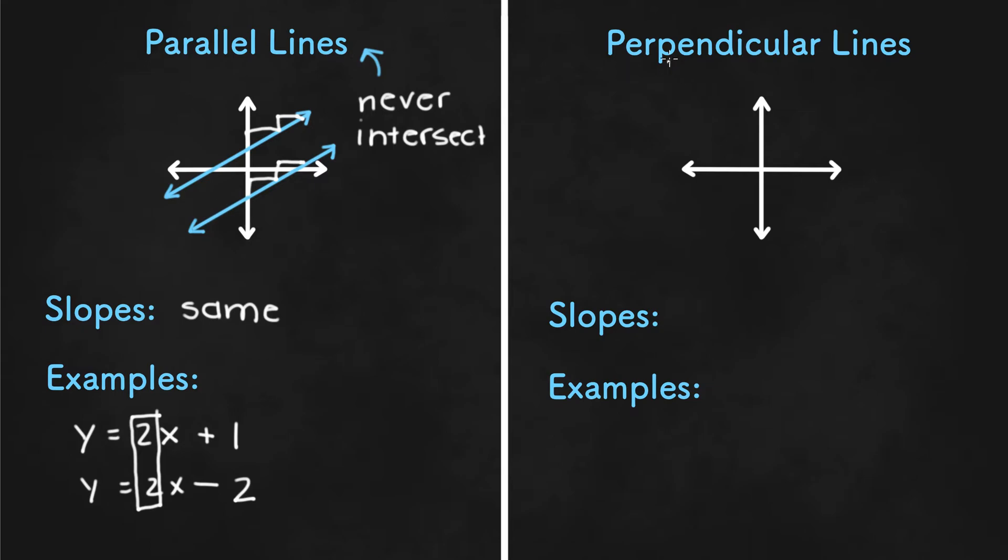Now perpendicular lines will look something like this. And they intersect to make a 90-degree angle.